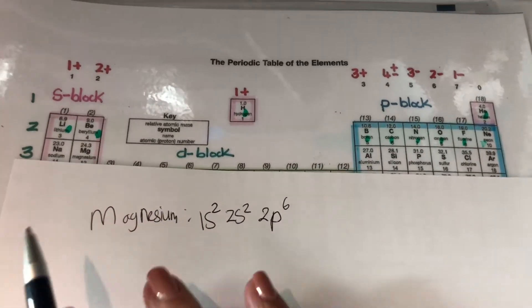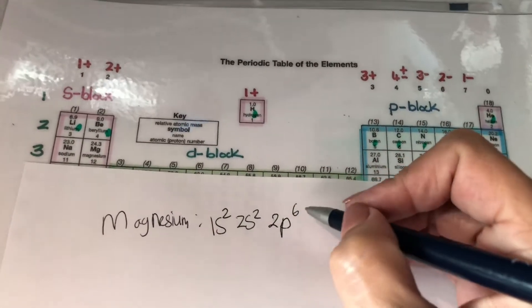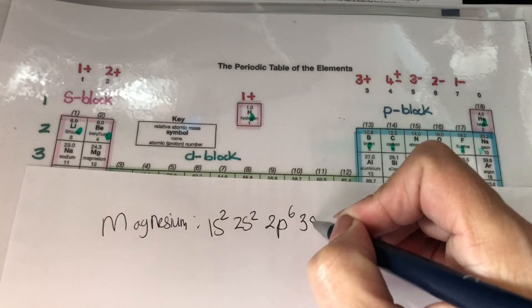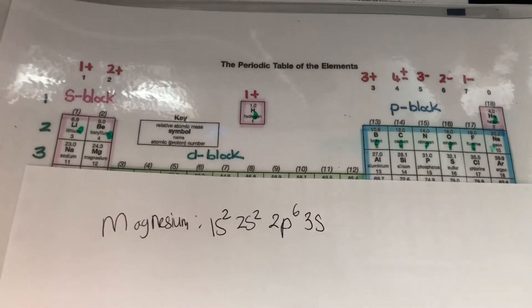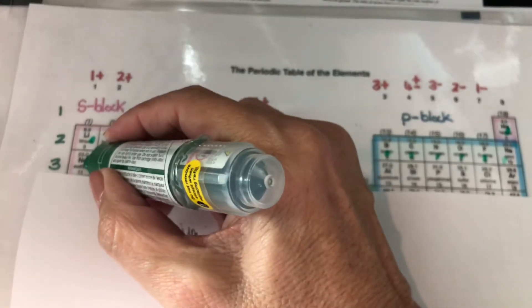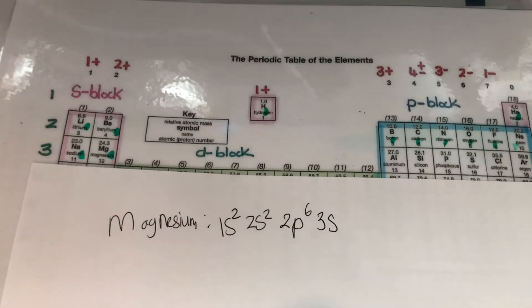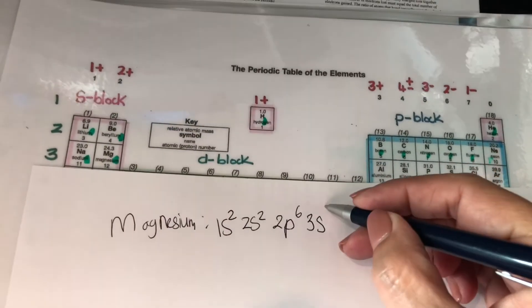Here is magnesium over here which means I will now go to my 3S orbital. 3S and magnesium being the second element means it will be 1 and 2. So you include up to that element. So 3S2.